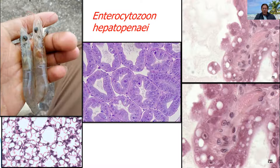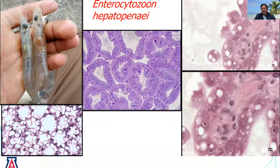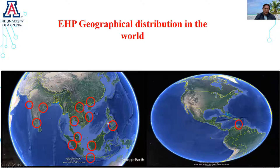As a comparison, we have a healthy section of hepatopancreas, and here we have a hepatopancreas affected by EHP. We can see the plasmodium stage and also the spore stage. Regarding the geographical distribution of EHP, you can see the red circles indicating Southeast Asian countries where EHP has been reported — pretty much most of the important shrimp farming regions. Now in the Western Hemisphere, in South America, we reported for the first time the presence of EHP in 2016.